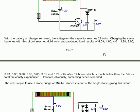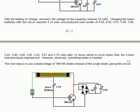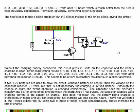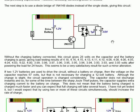The next step is to use a diode bridge of 1N4148 diodes instead of the single diode. That gives this circuit here. The Joule Thief circuit is as before, but the output is now passed through 4 diodes before reaching the capacitor and battery. Without the charging battery connected, this circuit gives 28 volts on the capacitor, as opposed to 22 volts with the single diode. And that's a considerable difference.